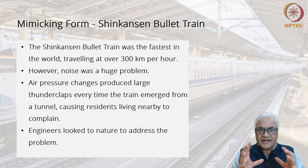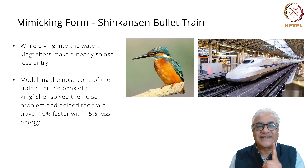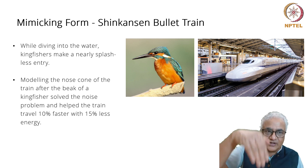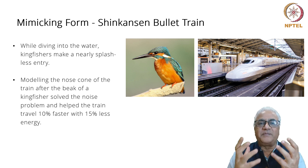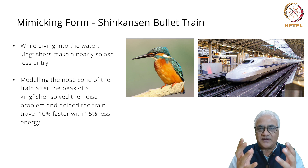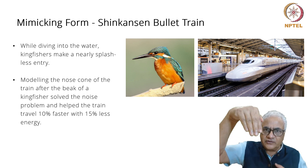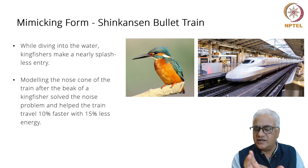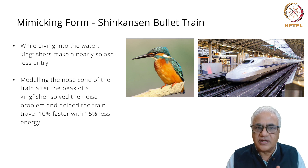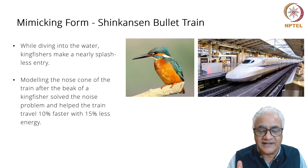And then the engineer who was designing the bullet train looked at the Kingfisher. He noticed something very strange — that the Kingfisher, when it was diving into the water, was making what is called a splashless dive. And he saw the connection. You will start to understand the power of biomimicry — it's called abstract to emulate. He suddenly said: the Kingfisher dives into the water without any splash. Is there an answer I can get from the Kingfisher to make my bullet train less noisy? Modeling the nose cone of the train after the beak of a Kingfisher solved the noise problem and helped the train travel 10 percent faster, which was not intended.